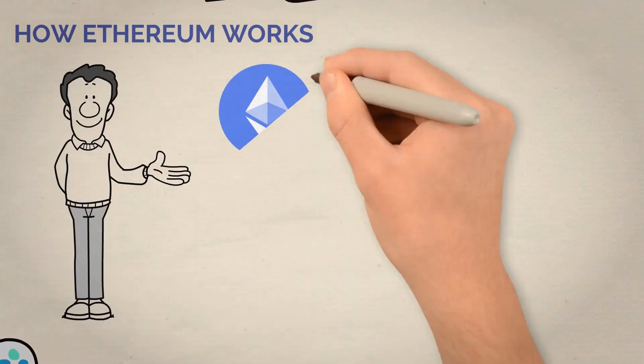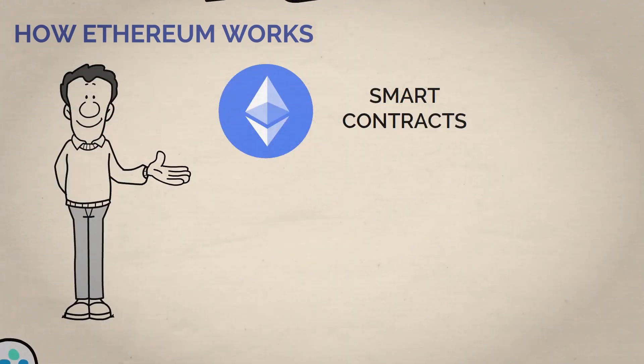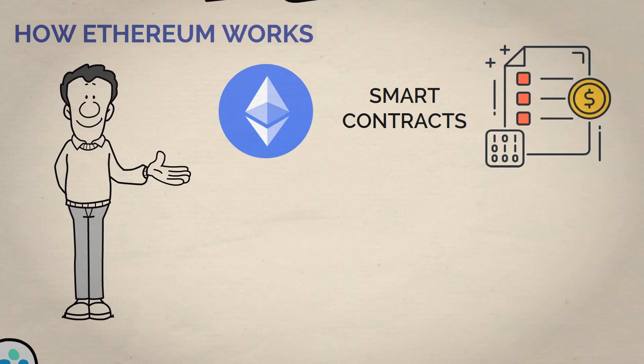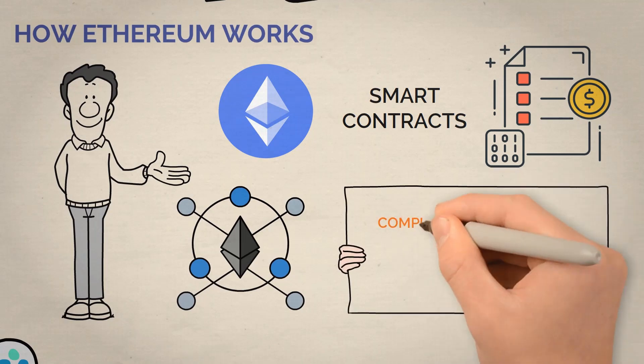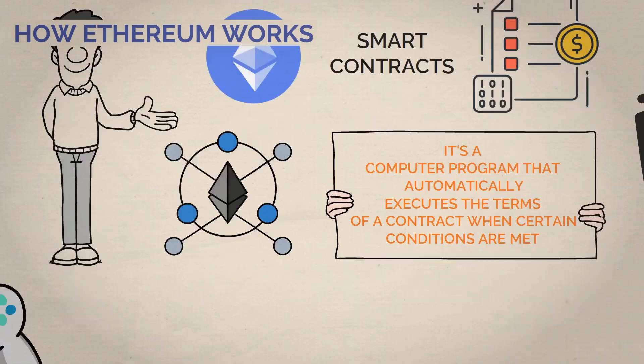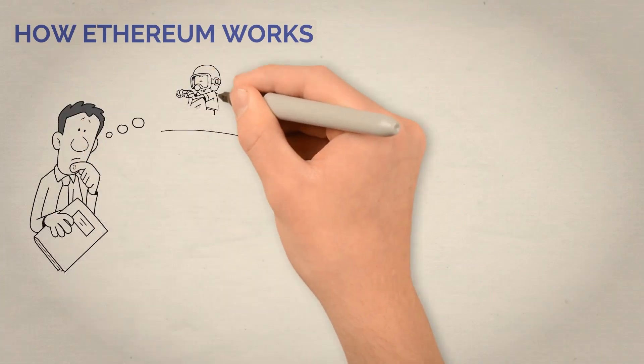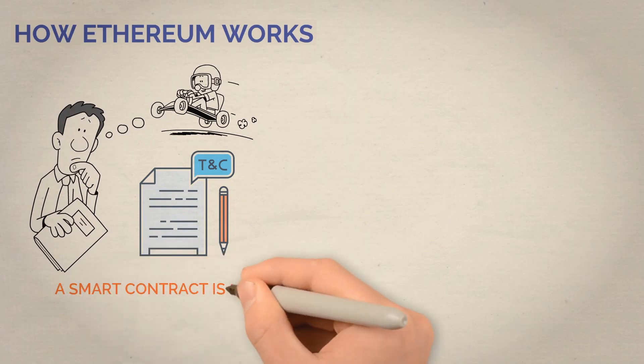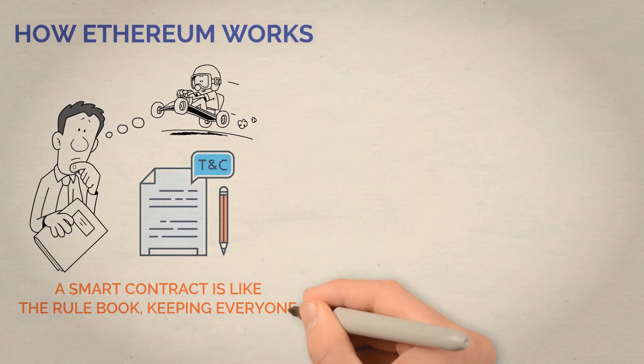But the cool thing about Ethereum is that it allows for something called smart contracts. Smart contracts are like regular contracts, but they're digital and run on the Ethereum blockchain. It's a computer program that automatically executes the terms of a contract when certain conditions are met. Think of it like you're playing a game with your friends and have to follow certain rules. A smart contract is like the rulebook, keeping everyone honest and on the same page.